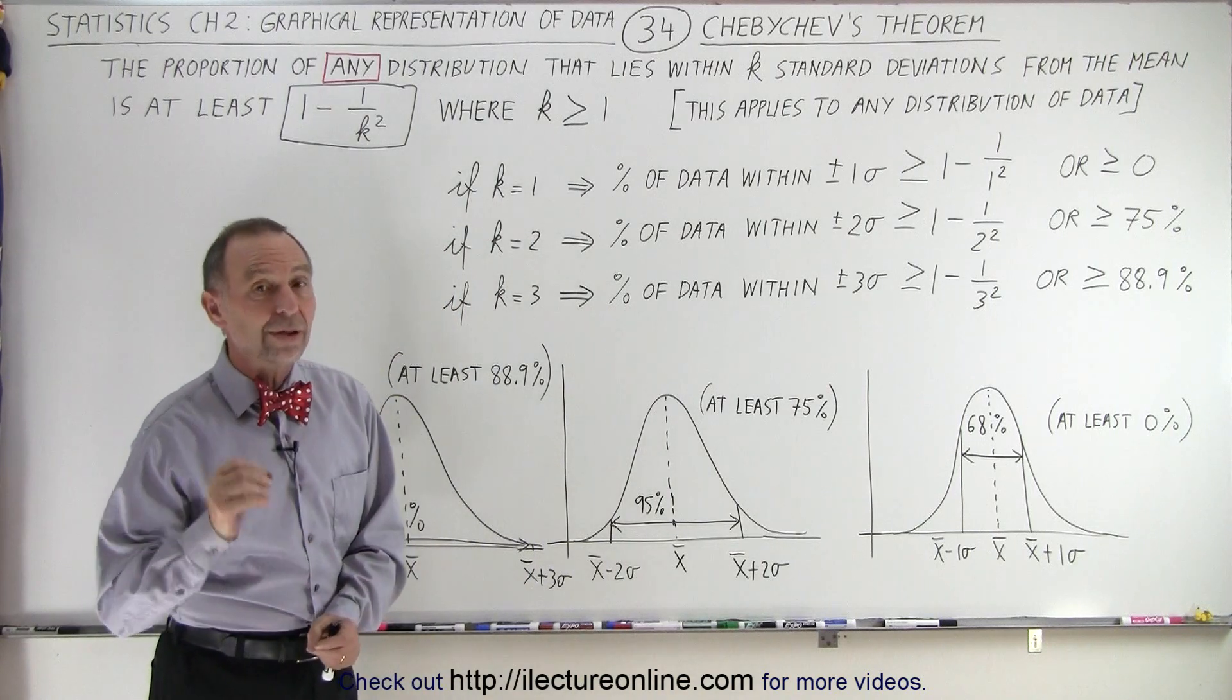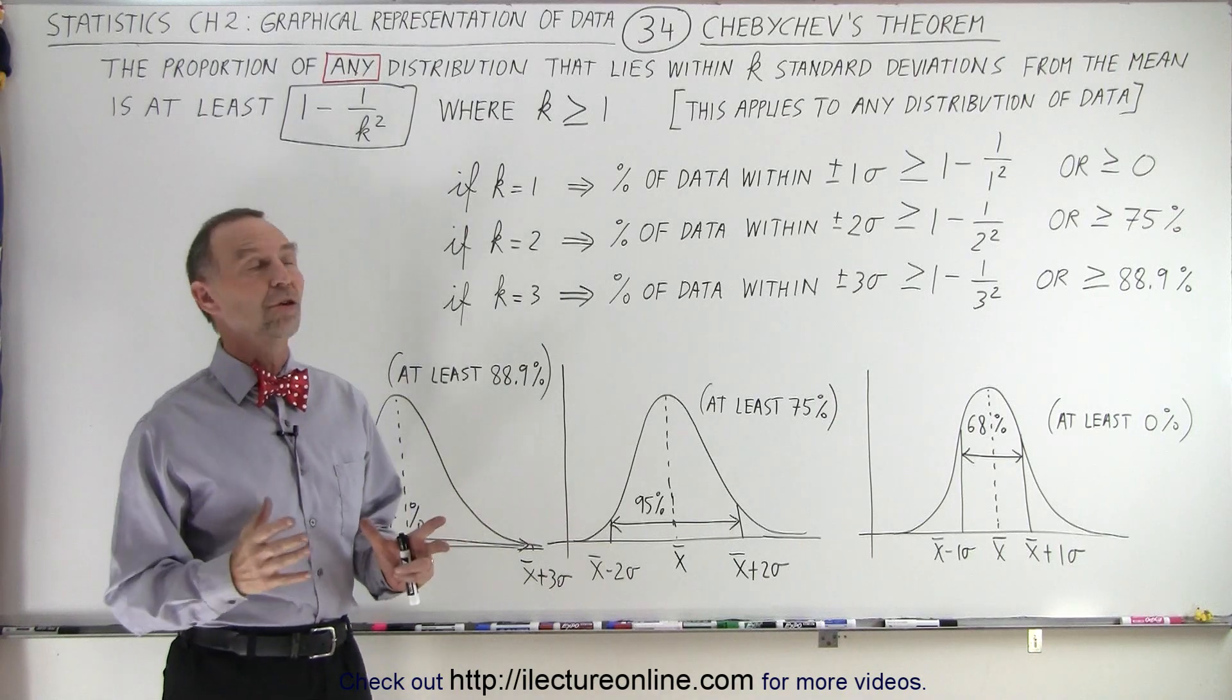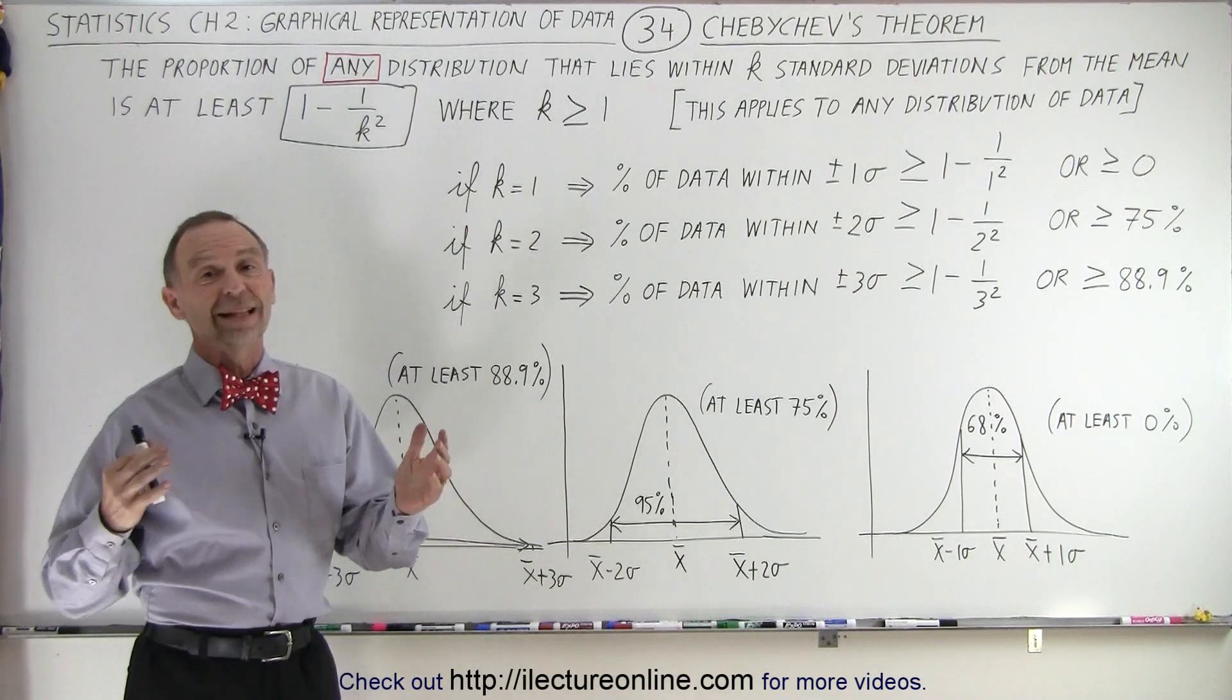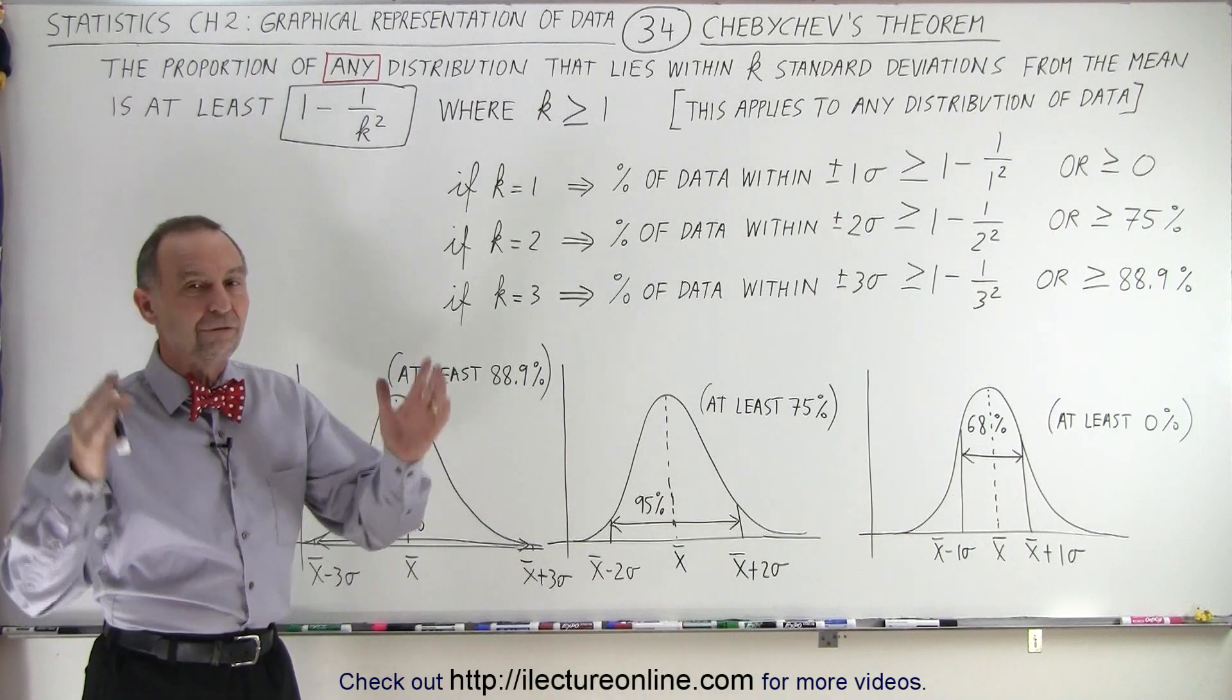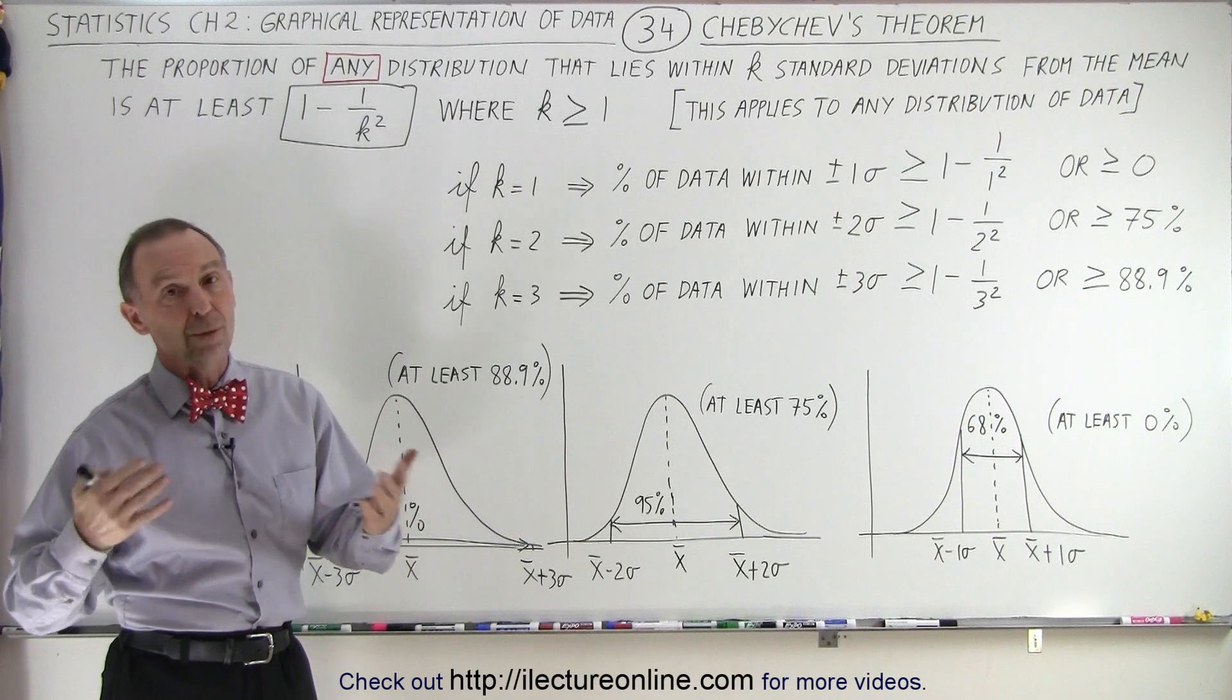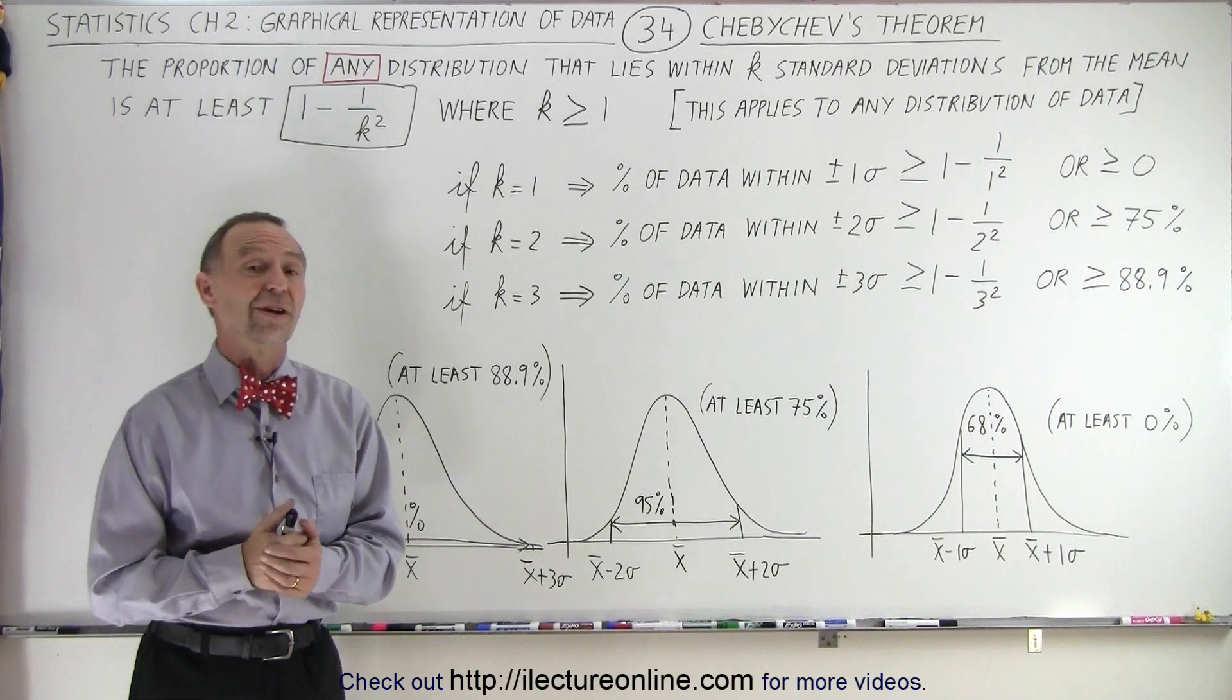So that comes in very handy when we're dealing with data that does not have a normal distribution. We can use Chebyshev's theorem to calculate the minimum amount of data falling between plus or minus k sigma, where k is one or greater, and that is what we mean by Chebyshev's theorem.